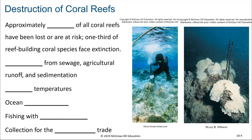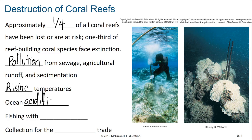One example of a habitat that we often destroy are coral reefs. Approximately one-fourth of all coral reefs have been lost or are at risk. One-third of reef-building coral species now face extinction, and this can be from pollution — either from sewage, agricultural runoff, or sedimentation. It also comes from rising temperatures, from ocean acidification, from fishing with explosives, which is more common than you might guess, and from the collection of organisms for the aquarium trade.